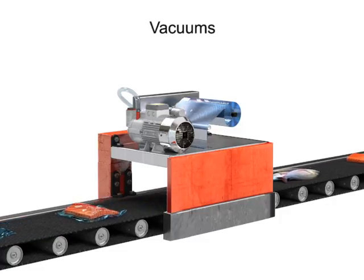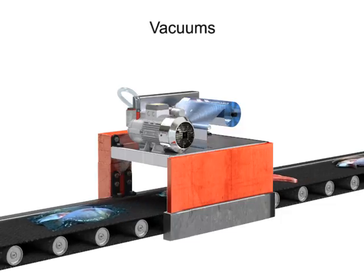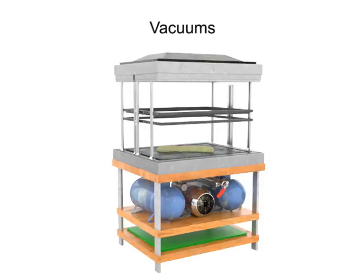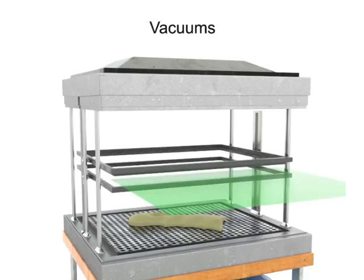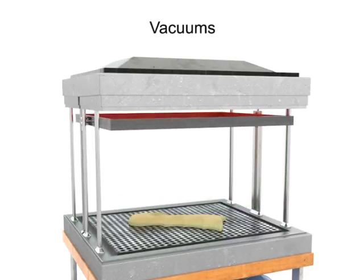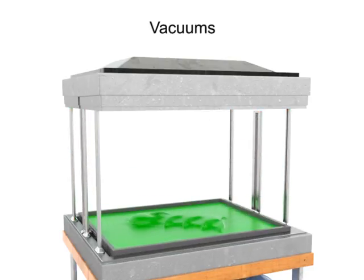Vacuum technology has developed significantly over the past few decades. Vacuum packing is used in a variety of industries to package and protect products. Plastic forming is also a widespread use of vacuum technology. In this application, a sheet of plastic is heated until it is malleable, then a mold is applied and a vacuum is used to form the plastic to the mold.